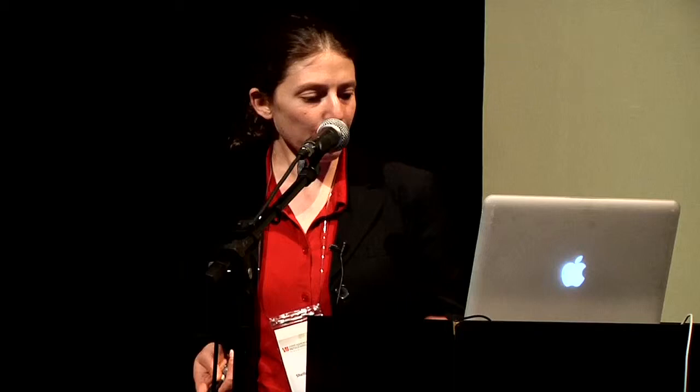This is data from Mary Carrington from an older study where they looked at the frequency of being homozygous for the wild-type CCR5 gene, heterozygous for the delta 32 mutation, and homozygous for the delta 32 mutation among people who were infected with HIV and those who were not. The frequency of wild-type homozygous and heterozygous individuals was pretty even between the HIV-negative and HIV-positive groups. But those who were homozygous for the delta 32 mutation showed about a 15-fold greater frequency in people who were not infected with HIV.